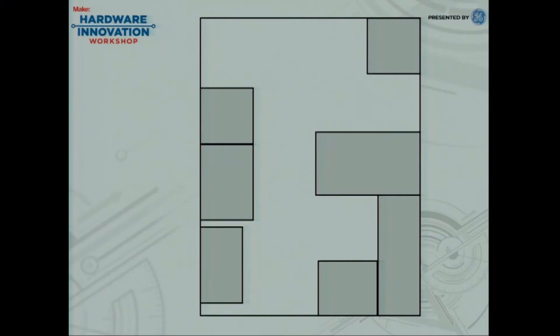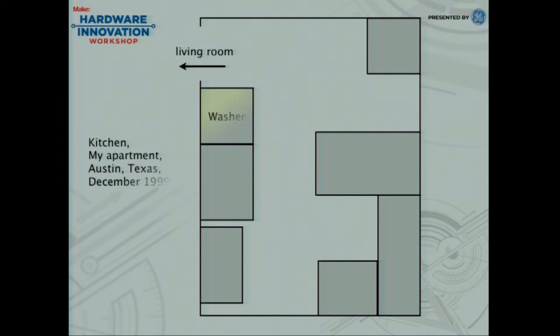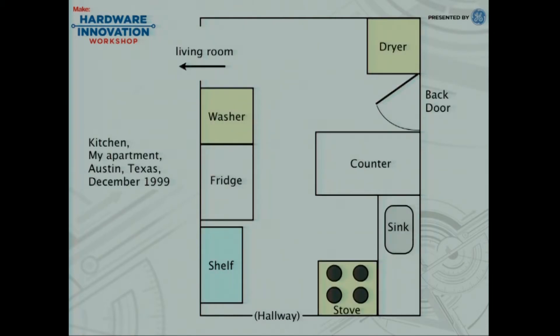That's kind of a funny story, but it starts with this diagram that you may not be familiar with. The reason you may not be familiar with it is because it's actually a diagram of my kitchen and my apartment in Austin, Texas in December 1999. This was a very small apartment — we had three people living here, and we had the washer, dryer, fridge, stove, sink, and counter all in this little room. And you may notice there's one thing missing, which is a kitchen table. We didn't have a kitchen table, and there wasn't any room for one.